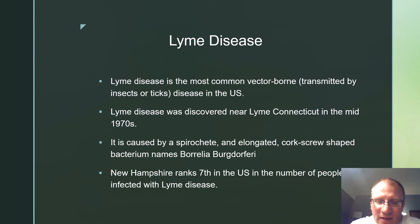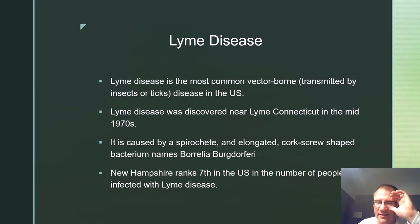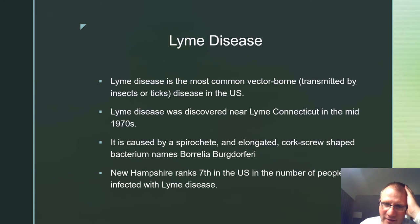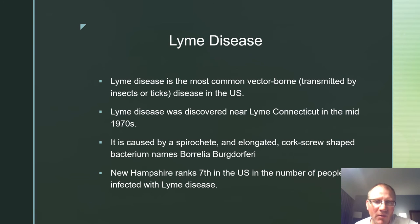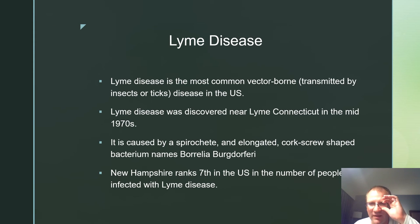Lyme disease is the most common vector-borne disease transmitted by insects or ticks in the U.S. It was first discovered near Lyme, Connecticut in the mid-1970s. It is caused by a spirochete bacterium — an elongated, corkscrew-shaped bacteria named Borrelia burgdorferi. New Hampshire ranks seventh in the U.S. for the number of cases of Lyme disease in people.